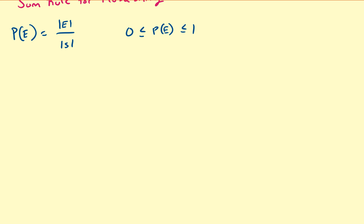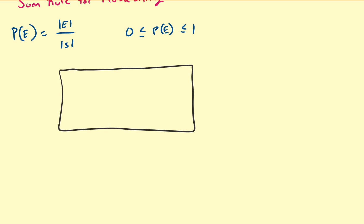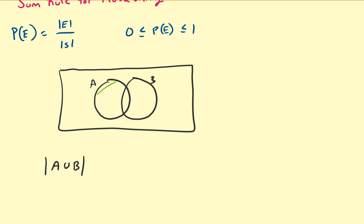To derive the next probability property that we want, consider this picture. Consider two different sets, A and B. Let A be on the left and let us assume B is on the right, and let us assume that A and B are not mutually exclusive — that is, they share some overlap. So if I want the size of A union B, A union B is going to be everything that is in both A and B. So if I want to find the size of A and B,